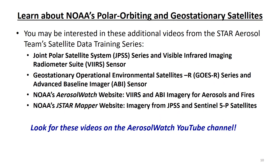Now that you are familiar with the basics of satellite remote sensing, you may wish to explore other titles in the STAR Aerosol Team Satellite Data Training Series, including the Joint Polar Satellite System (JPSS) Series and the Visible Infrared Imaging Radiometer Suite (VIIRS) Sensor, which describes NOAA's polar orbiting satellites and VIIRS sensor in more detail; and the Geostationary Operational Environmental Satellites GOES-R Series and the Advanced Baseline Imager (ABI) Sensor, which describes NOAA's next-generation geostationary satellites and the ABI sensor in more detail. There are also tutorials on how to navigate NOAA's Aerosol Watch and JSTAR Mapper websites, where you can find prepared imagery from VIIRS, ABI, and other polar orbiting satellite sensors. Look for these videos on the Aerosol Watch YouTube channel.